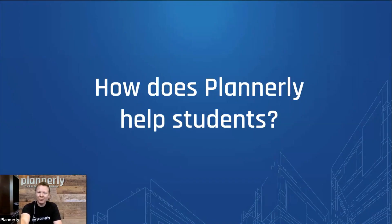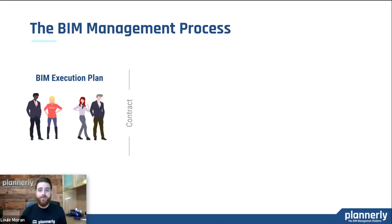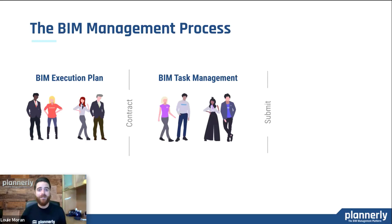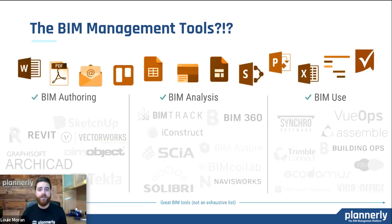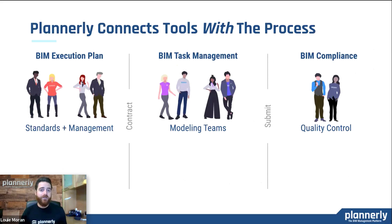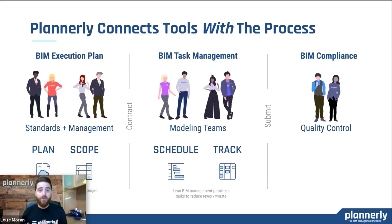But what about the students? How do we help them? With students, we help them learn three main steps to the BIM process: the creation of the BIM execution plan, the management of the tasks that come out of that plan, and then BIM compliance — making sure we've met those expectations from the original contract or BIM execution plan. We also have to understand the tools they need to use. There are lots of great tools for BIM when it comes to modeling, analyzing uses, and pulling information from models. But it can be hundreds of tools and combinations, and that's where things get confusing. With Plannerly, we connect the process with the tools: the Plan and Scope modules help create the BIM execution plan, the Schedule and Track modules help manage tasks, and the Verify module connects the model to requirements to ensure higher quality models.